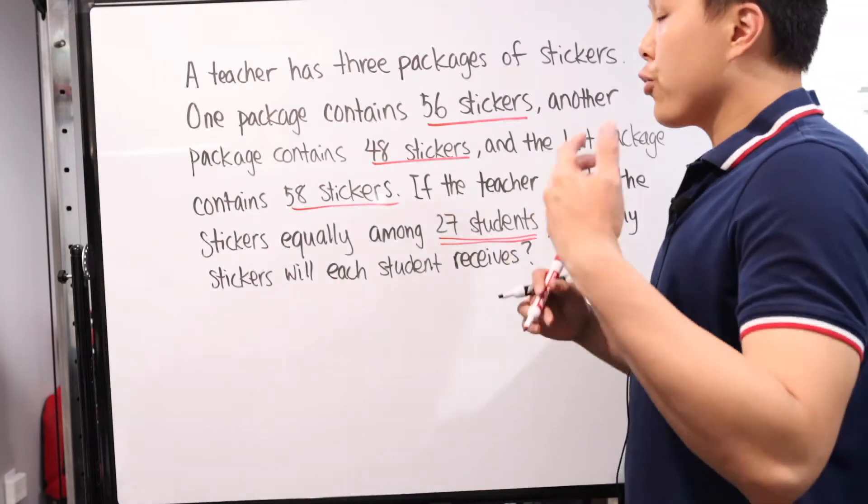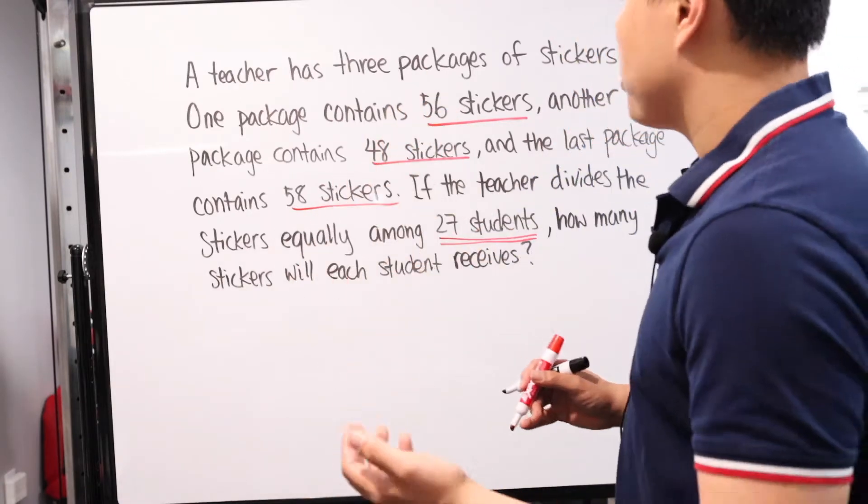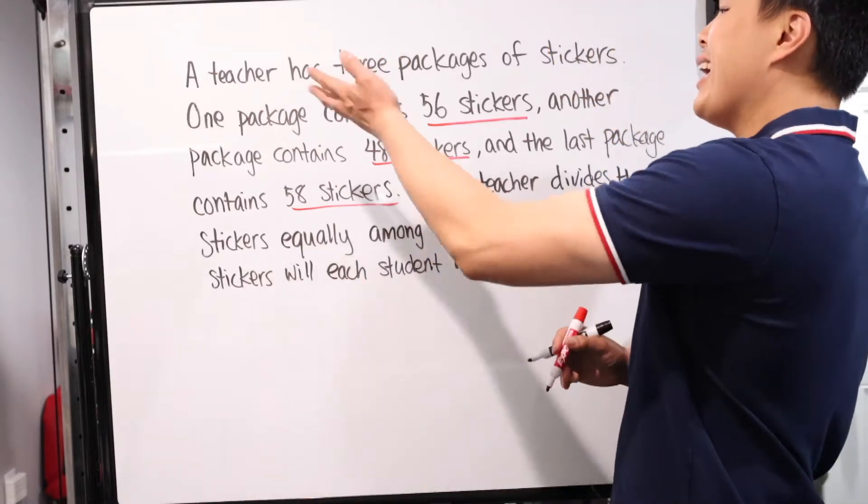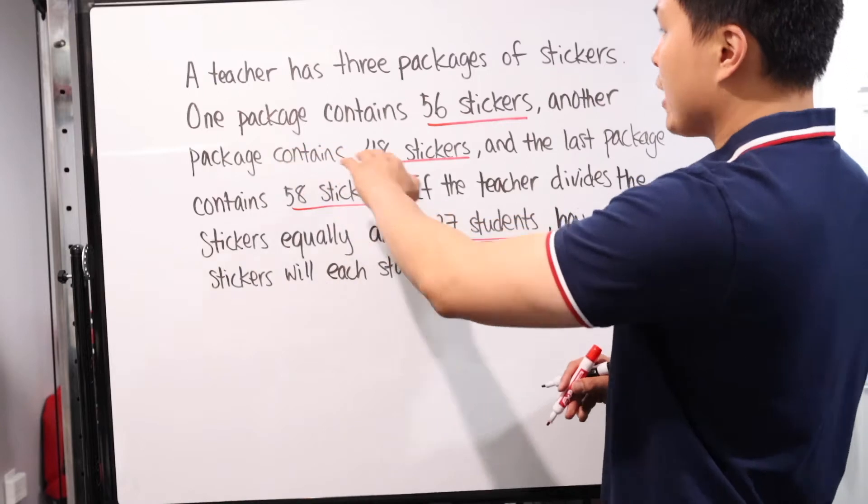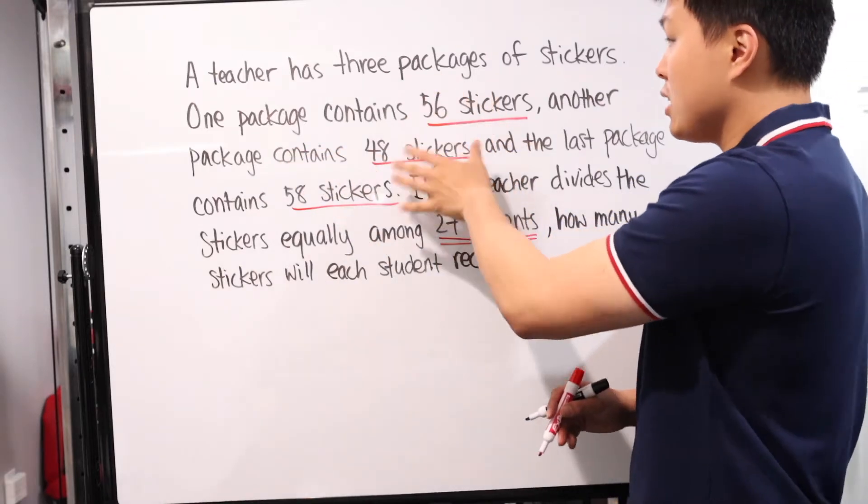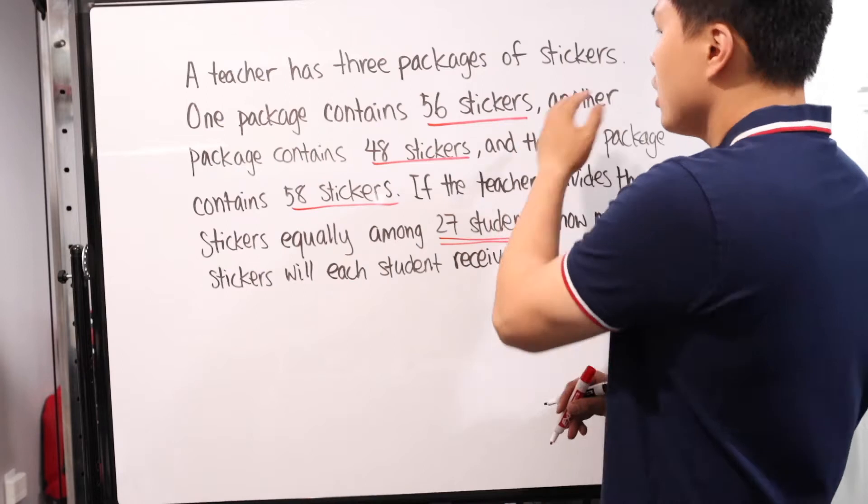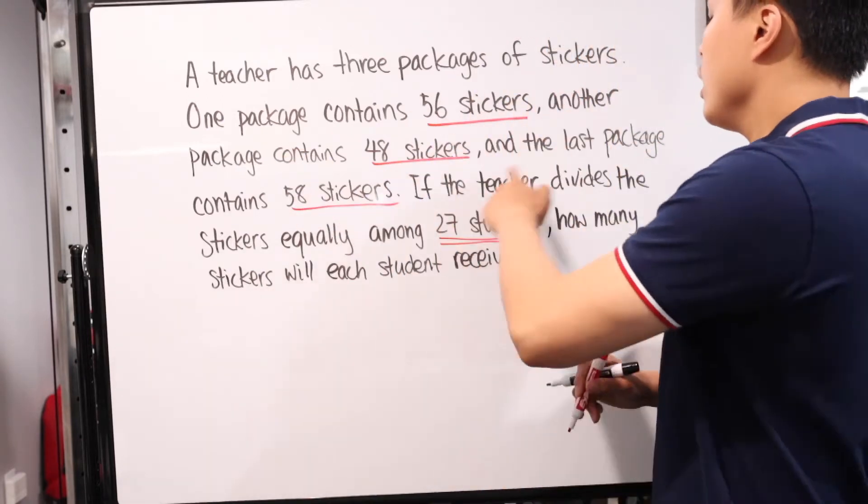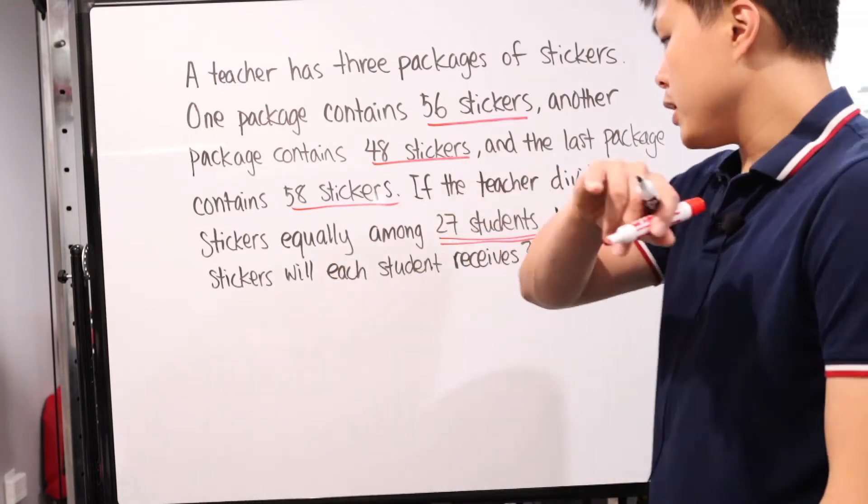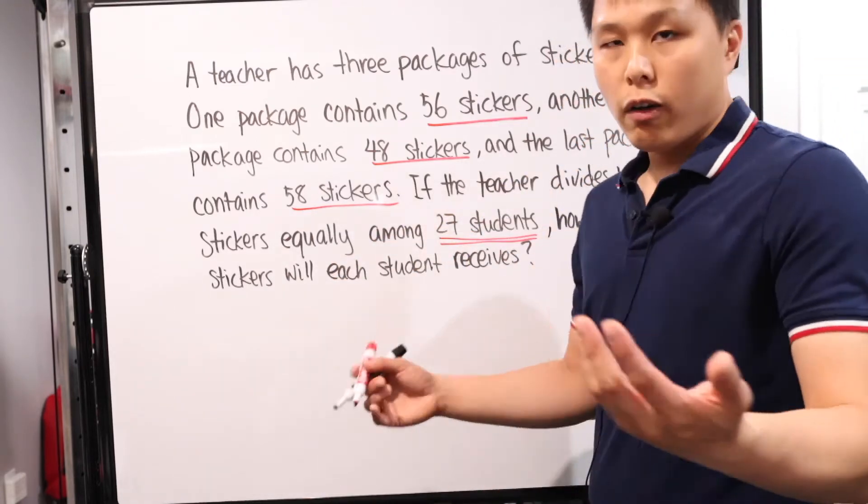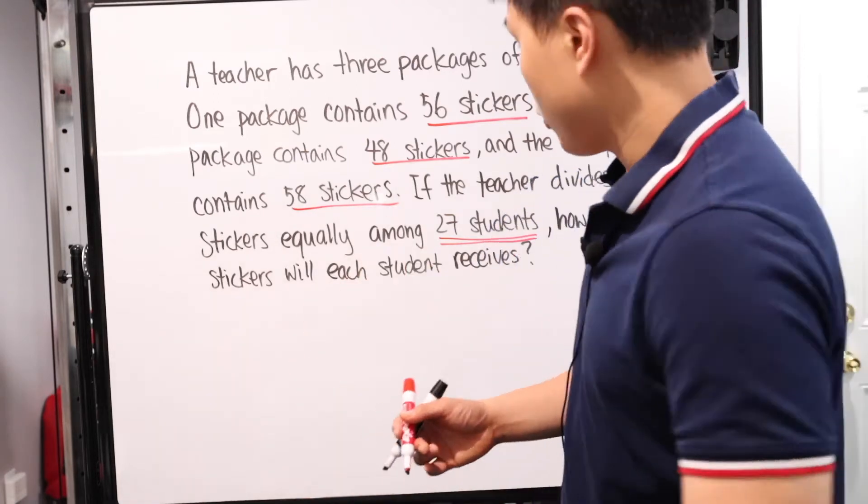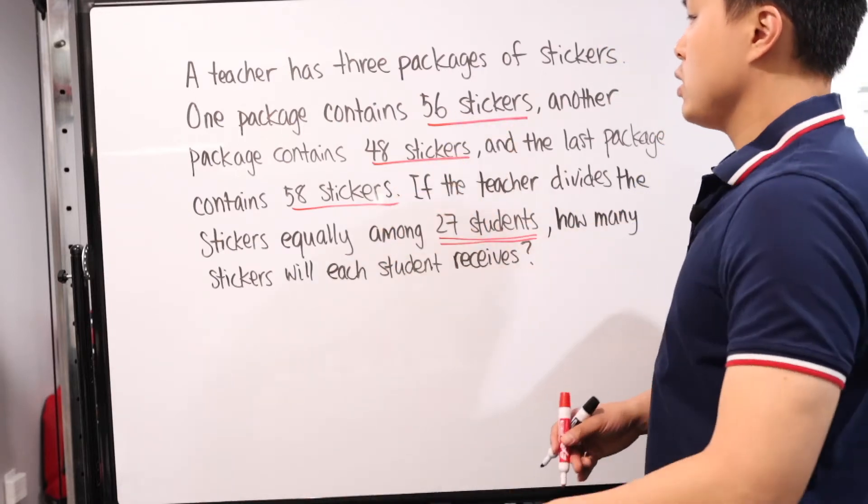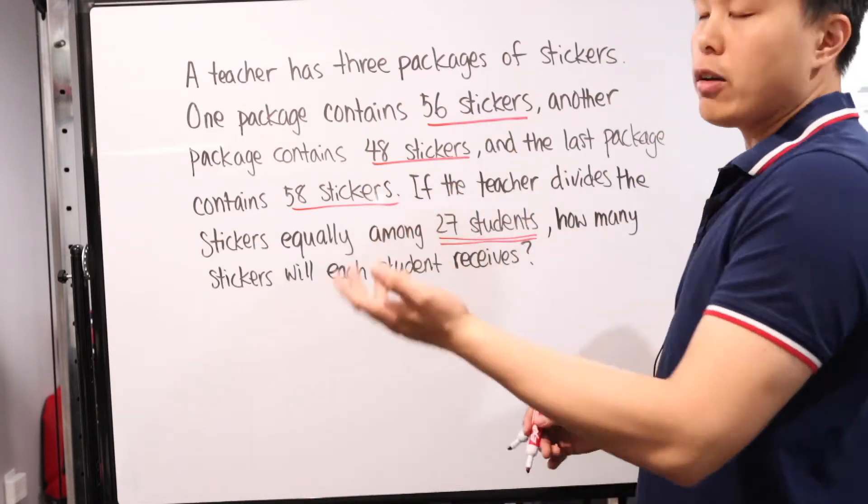Let's look at our third problem. This is a standard, fairly simple problem. You've probably seen many variations when learning basic arithmetic. A teacher has three packages of stickers. One package contained 56 stickers, another package has 48 stickers, and the third package has 58 stickers. If the teacher divides the stickers equally among 27 students, how many stickers will each student receive? Fairly simple.